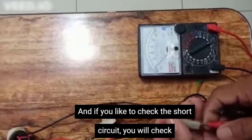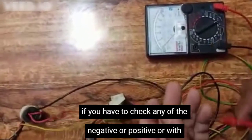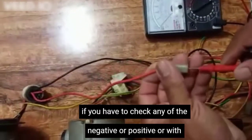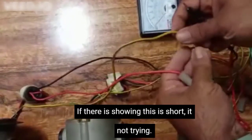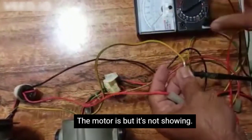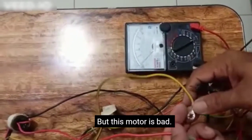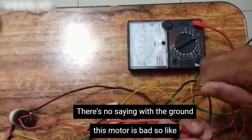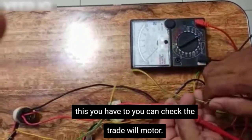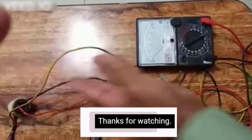If you like to check the short circuit, you have to check any of the negative or positive wire with the ground. If it is showing, this is short circuit, the motor is bad. But this is not showing, this is not short, but this motor is bad. It's not swinging with the ground. This motor is bad. So like this, you can check the treadmill motor. Thanks for watching.